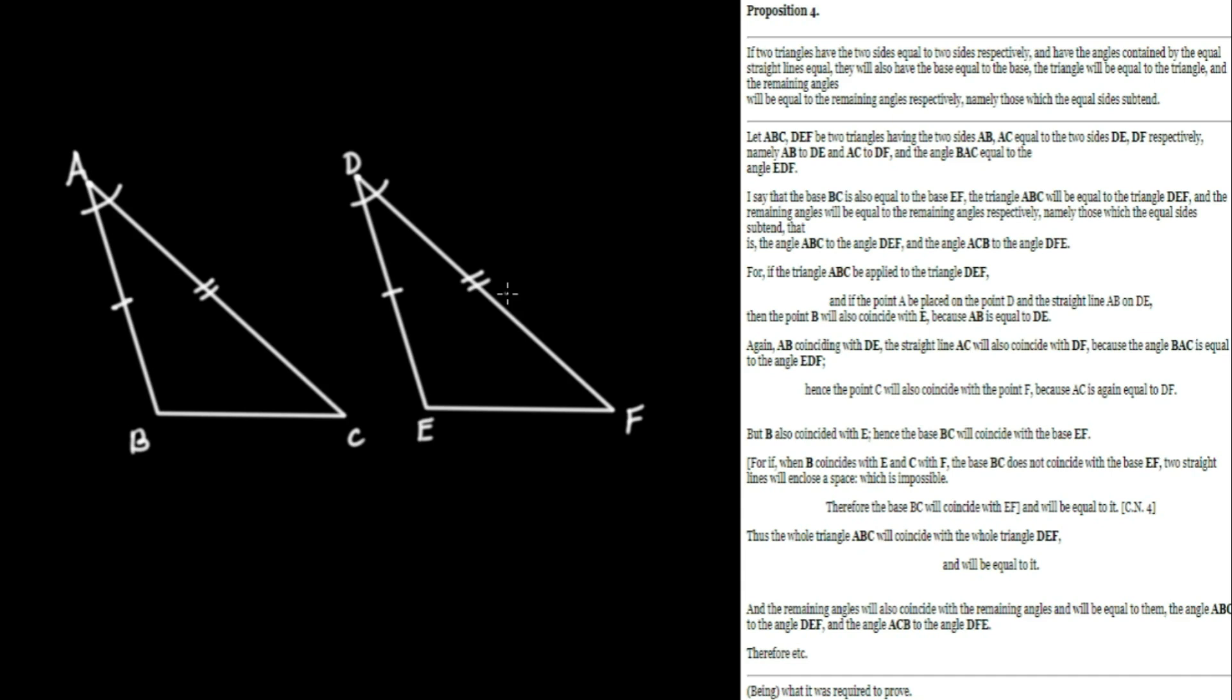Let's also note that there are three claims here. The first one is that the base BC will be equal to EF. That's the first claim. The second claim is that the triangle ABC is going to be equal to the triangle DEF. And the third one is that the angle ABC will be the same as the angle DEF. And ACB will be the same as DFE. Those are the three claims.